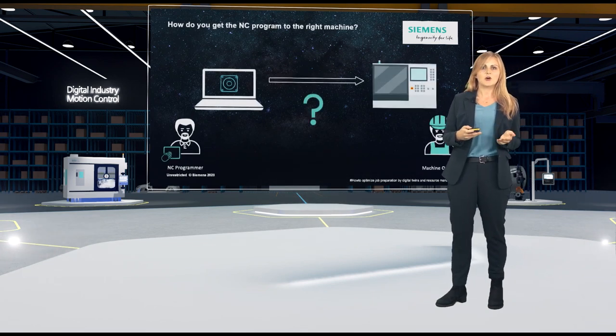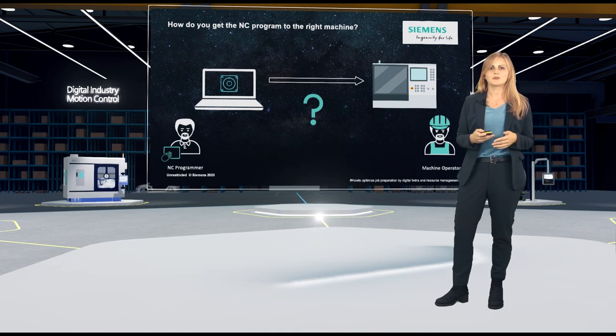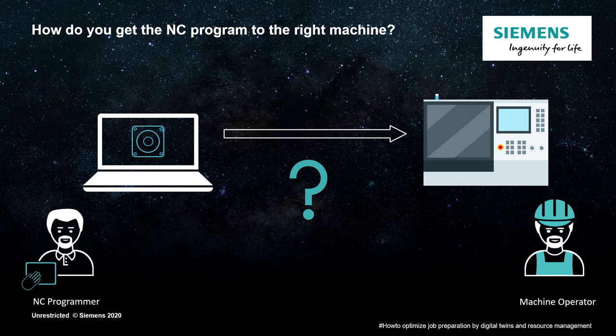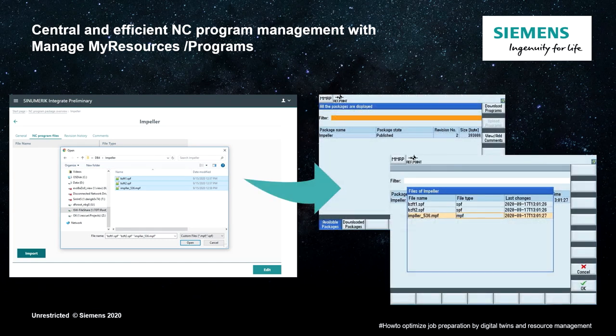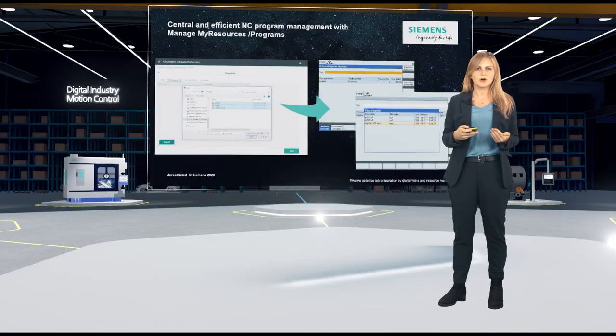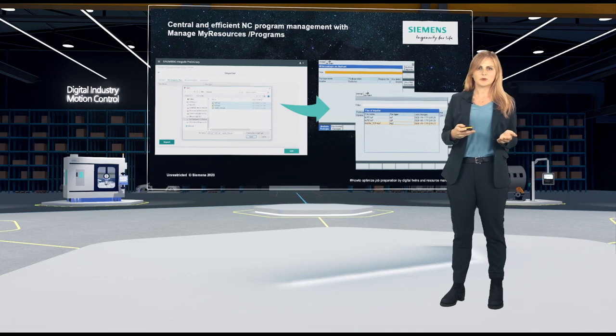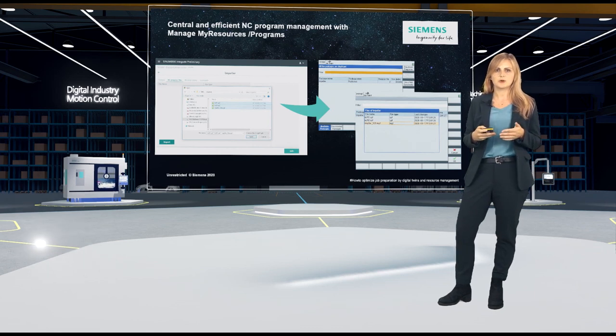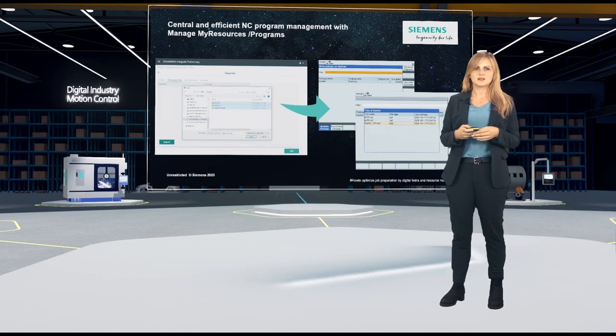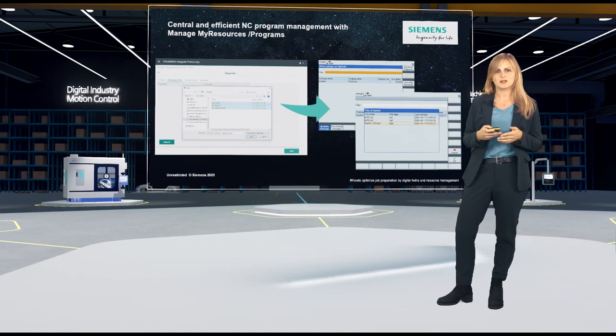First of all, the question is how to get the verified NC program to the right machine. The NC programmer has stored the program on a network drive. Normally, he would, for example, copy it to a USB stick and give it to the machine operator at the next opportunity. But isn't there a more efficient solution for this? With a program management software such as ManageMyResources, the created NC programs can be imported from the network drive to a central server. The NC programmer can then assign the program specifically to the desired machine. And he can also provide the machine operator with some instructions for machining via a comment function.